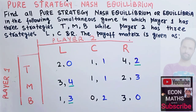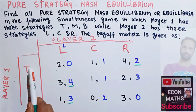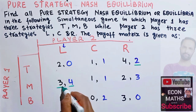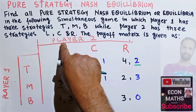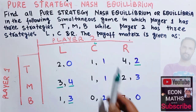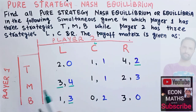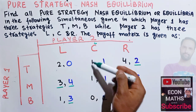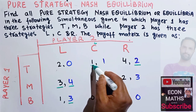Now we take Player 1 into consideration. Suppose Player 2 chooses strategy L. Player 1 can choose T, M, or B, with payoffs 2, 3, and 1 respectively. The biggest is 3, so we underline M. Suppose Player 2 chooses C. Player 1's payoffs are: T gives 1, M gives 1, and B gives 0. Since T and M are tied, we underline both.